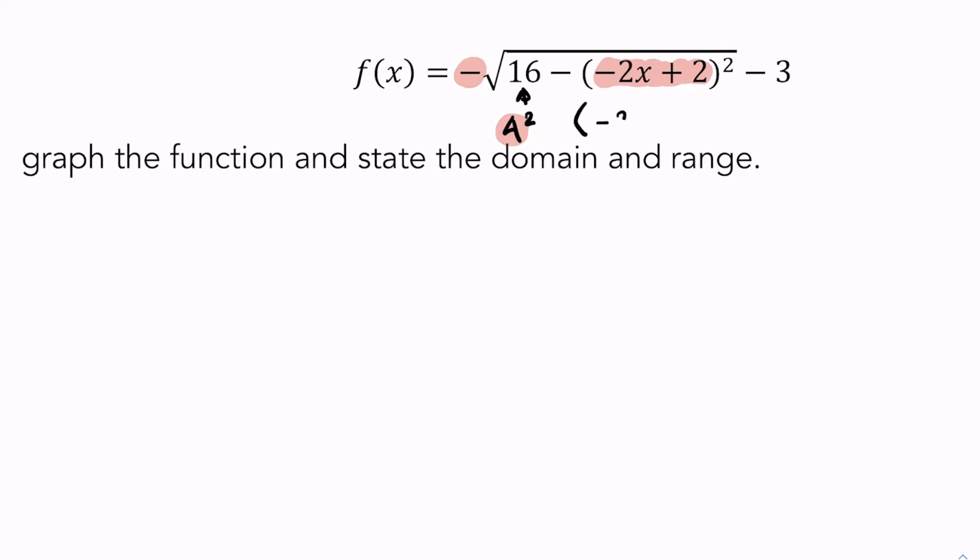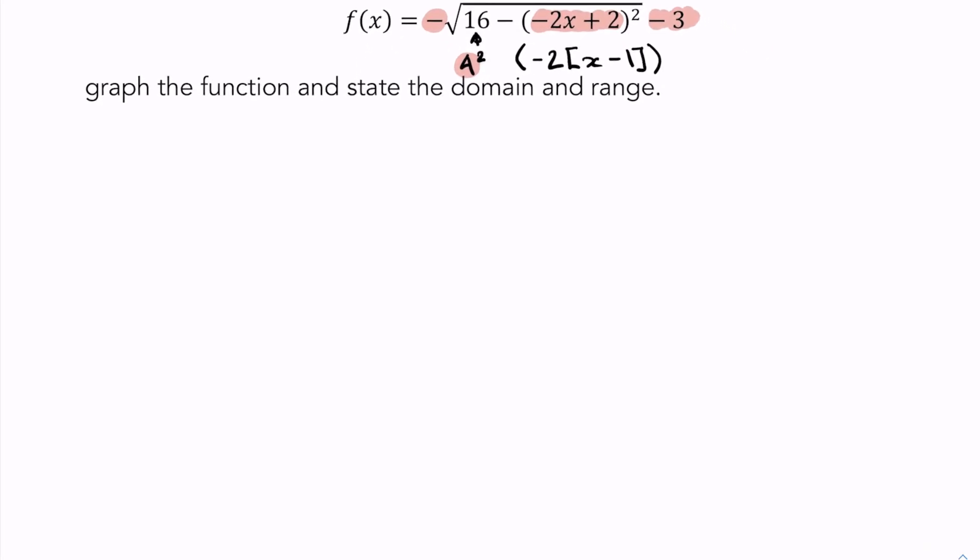You've got to factor out that negative 2, and what you're left with inside is actually not a positive 2 but a negative 1 when you factor it out. Actually I'm going to remove that square. The negative 3 there is going to be our vertical shift down 3 units. Let's get started.